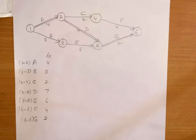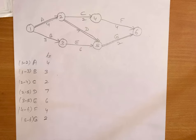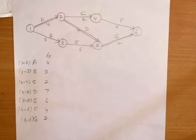Dear students, yesterday we discussed example 13. We learnt how to calculate expected time for each activity and how to find out the critical path, which was 1, 2, 5, 6 — the longest path.